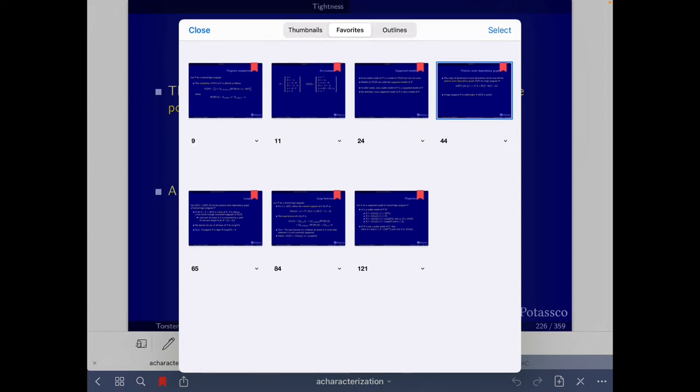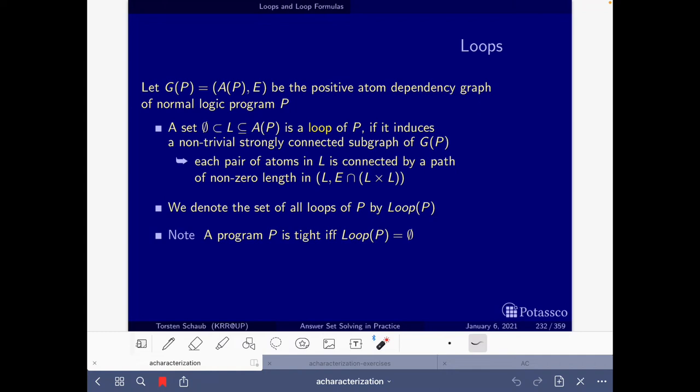In the slides you will find many examples of this, but here I'm going just to the relevant definition. Here we have the definition of a loop. You have the technical definition, but basically we look at the dependency graph and we look for the loops in that graph, and then a loop is formally represented by the set of the atoms that belong to the loop.